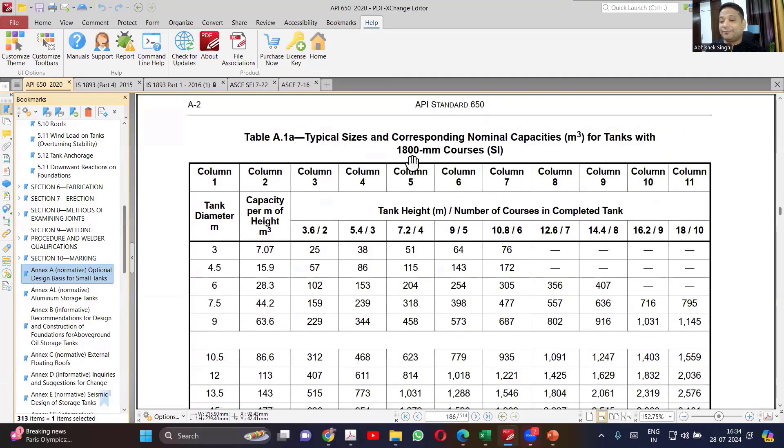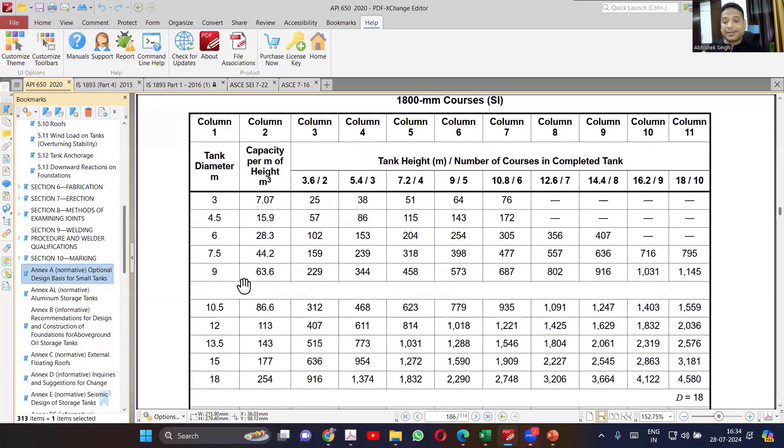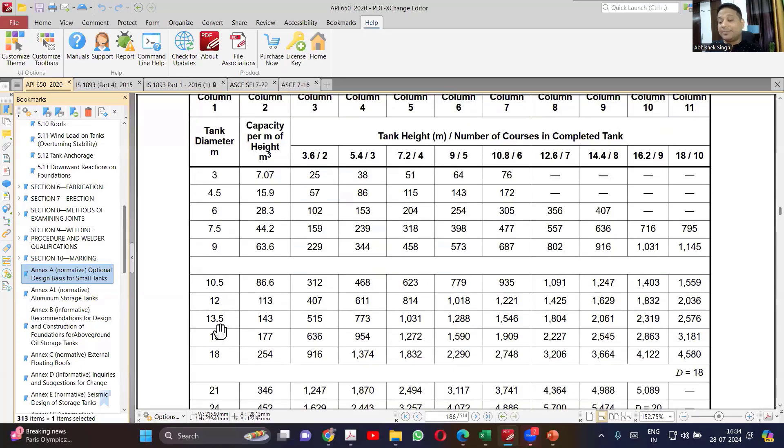So let's see. I have 1800 plate width I want to use, and in our case, the diameter was 13. So 13 is not available, so I can go with 13.5. So what capacity I will be having? 143 per meter of height. So if I am selecting 18 meter, then the capacity which I will be having is 2576.